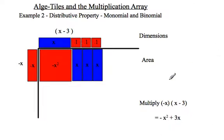If I check the shortcut, negative x times x is negative x squared. Negative x times negative 3: two negatives make positive. And what do you know? It still works.